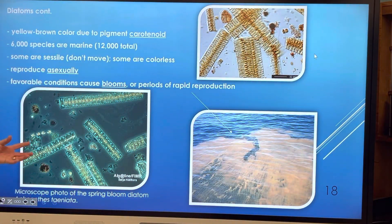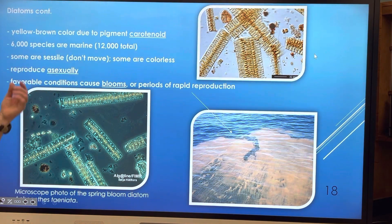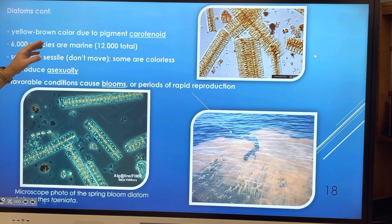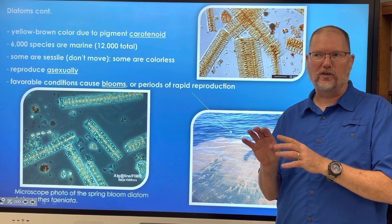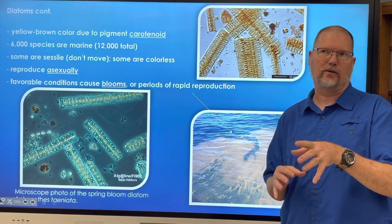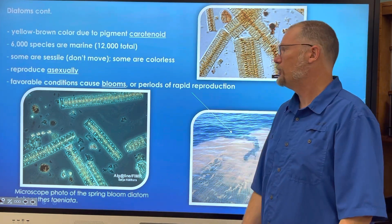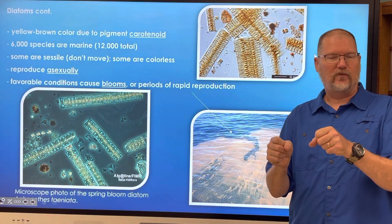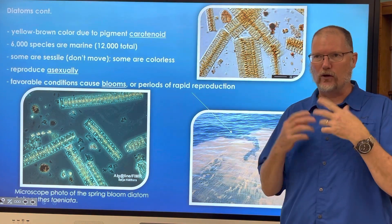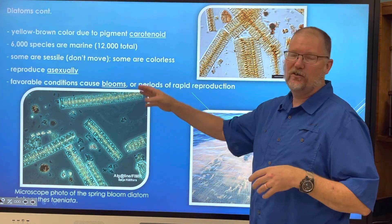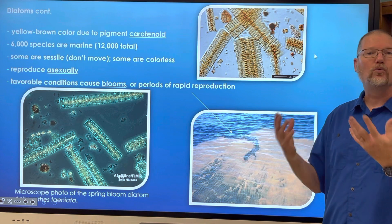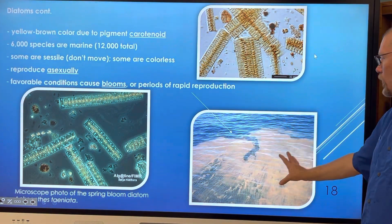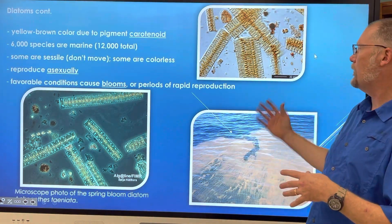Diatoms are yellow to brown in color because they have a pigment called carotenoids — the same pigment that gives carrots their orange color. There are 6,000 marine species and 12,000 total in the world, so about half are freshwater. Some are sessile, meaning they do not move — the opposite of motile. They reproduce asexually, so their cells split via mitosis. Favorable conditions cause blooms; when too much nitrogen or fertilizer pours into the water, it can cause rapid reproduction and produce toxic materials that kill fish and even manatees.